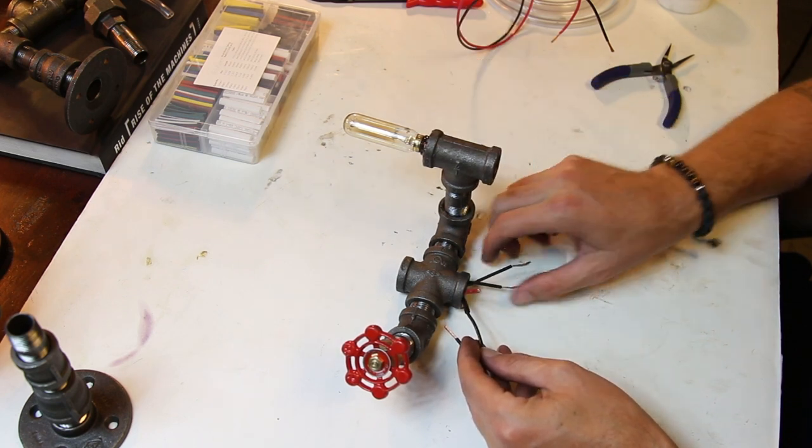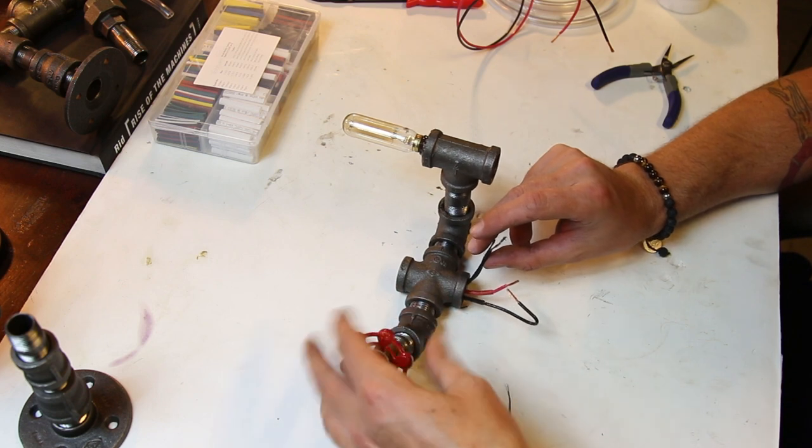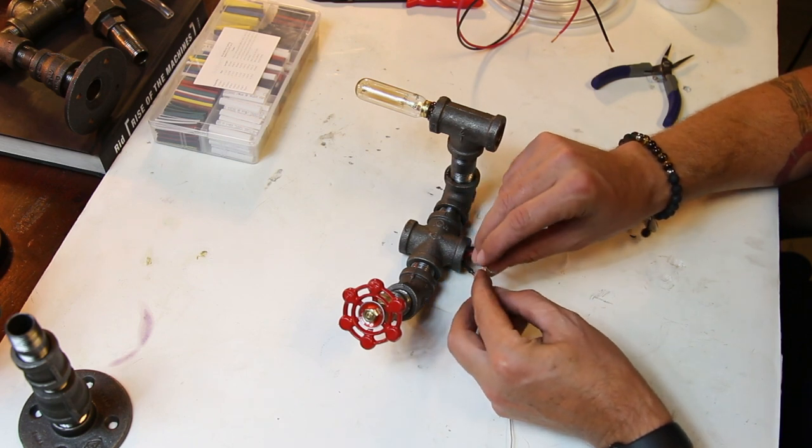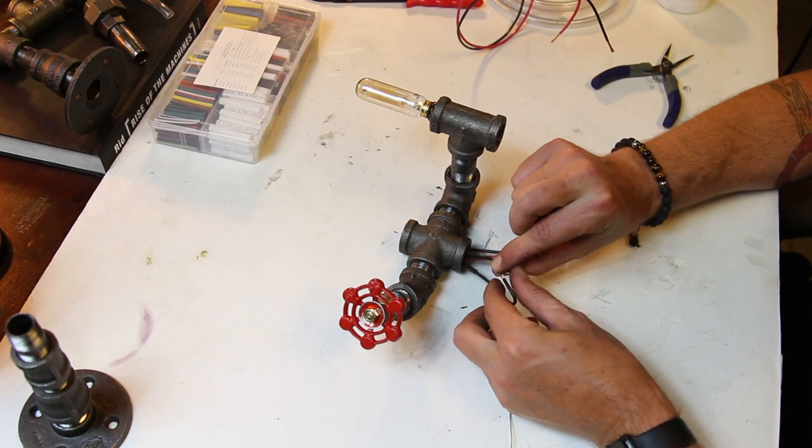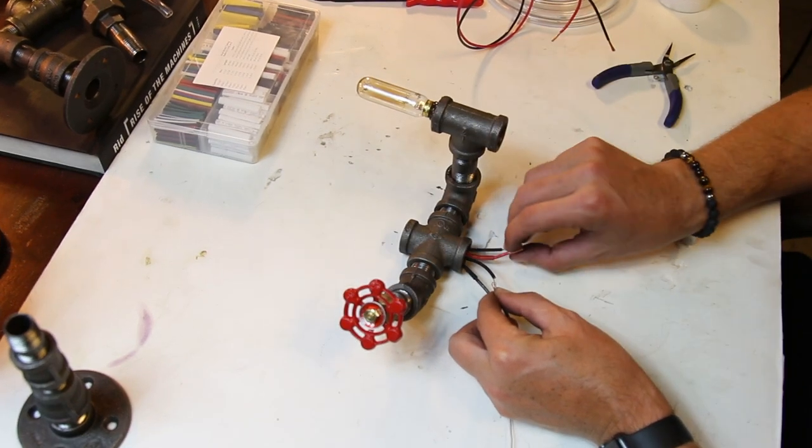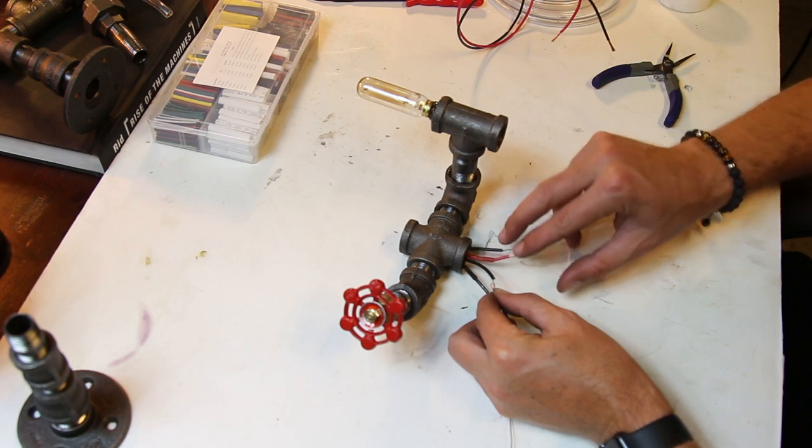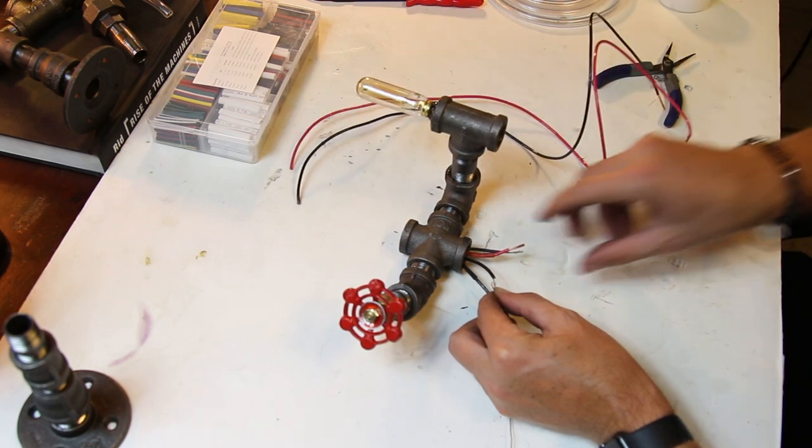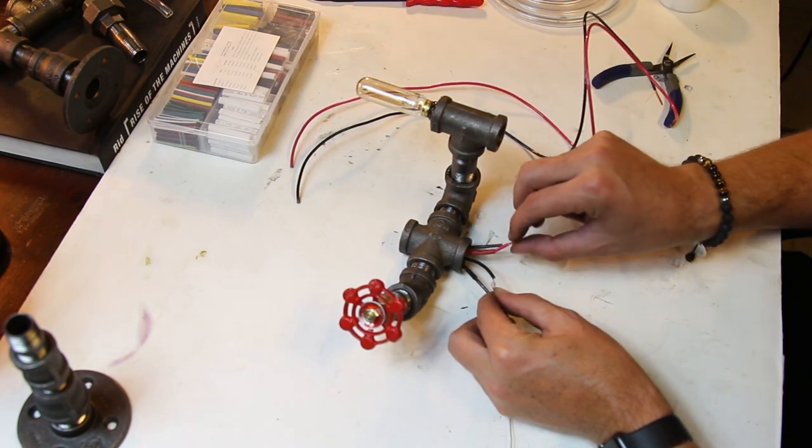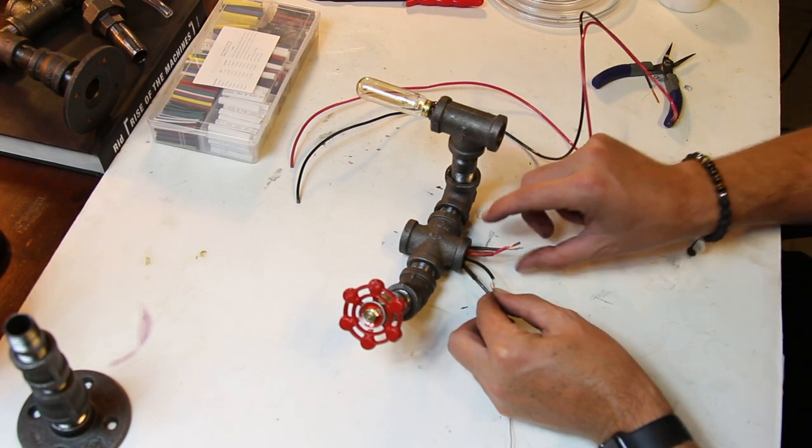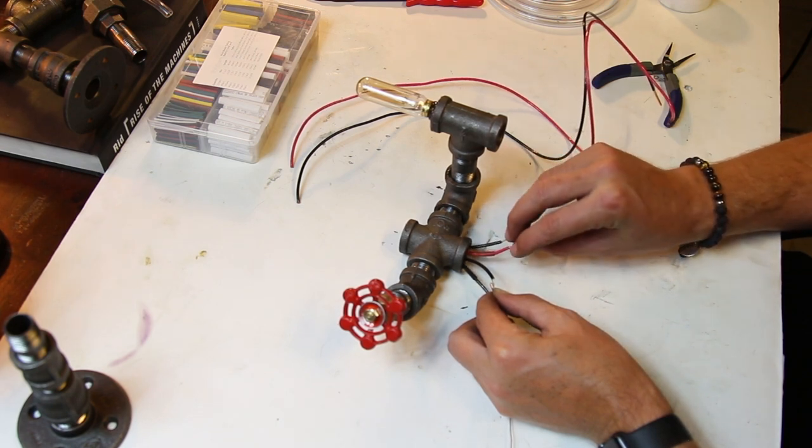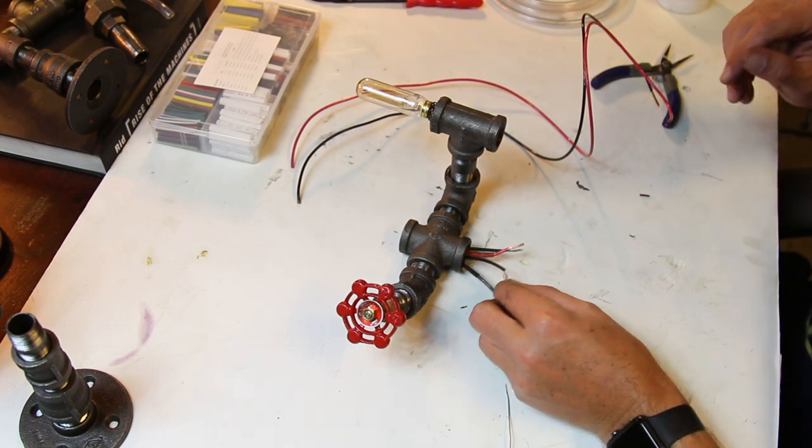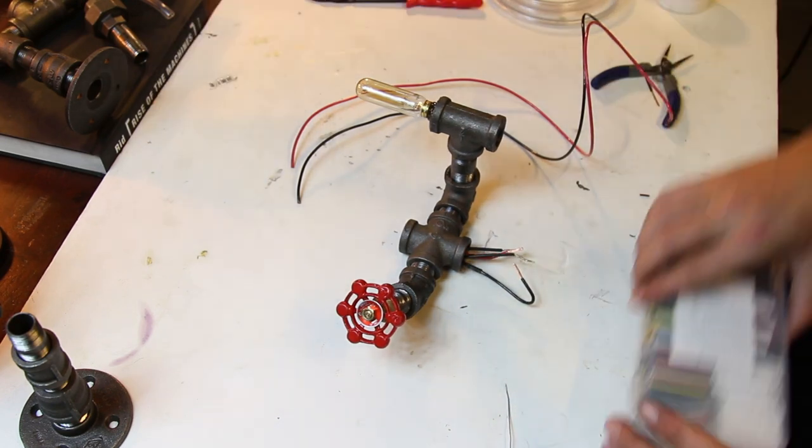So what we'll do is these two right here are coming from the light. These two are coming from the switch over here. We'll take the black from the light, solder it to one of the blacks from the switch. And then these two will go to our incoming lines. So we'll have one line - the black will be going to the switch, the red will be going straight to the light bulb. That way you have power to both of these. That way when you turn the switch, it continues the power through the black up to the light and your light will come on. So we'll go ahead and solder these connections together.